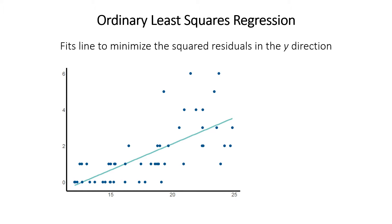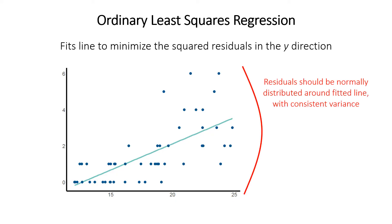I'll assume you have some familiarity with traditional linear regression, which fits a line to minimize the squared residuals in the y direction. One key requirement of linear regression is that the residuals should fall evenly around the fitted line with a normal distribution of residuals that has a constant variance at all points along the line.